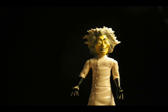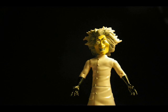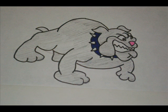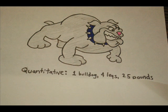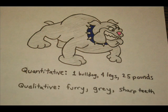I'll give you some examples by making observations about a bulldog. I'll start with quantitative: there is one bulldog, it has four legs and weighs 25 pounds. Now qualitative: he's very gray and has sharp teeth. See? It's easy. Quantitative has to do with numbers or quantity. Qualitative has to do with describing attributes or quality.